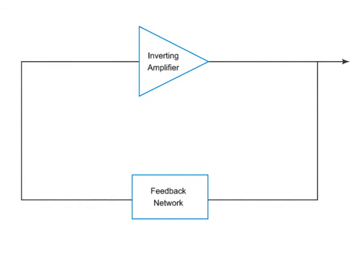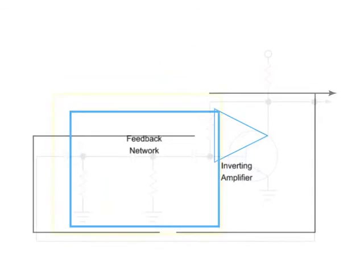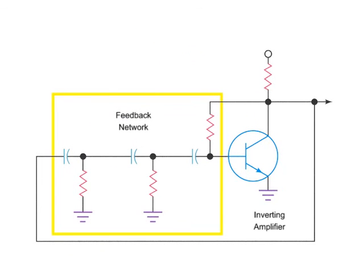Feedback networks can function in a variety of ways. In this oscillator example, a phase shift network is employed. This feedback network uses a series of capacitors and resistors to shift the signal's phase by 180 degrees as the signal passes through the network.